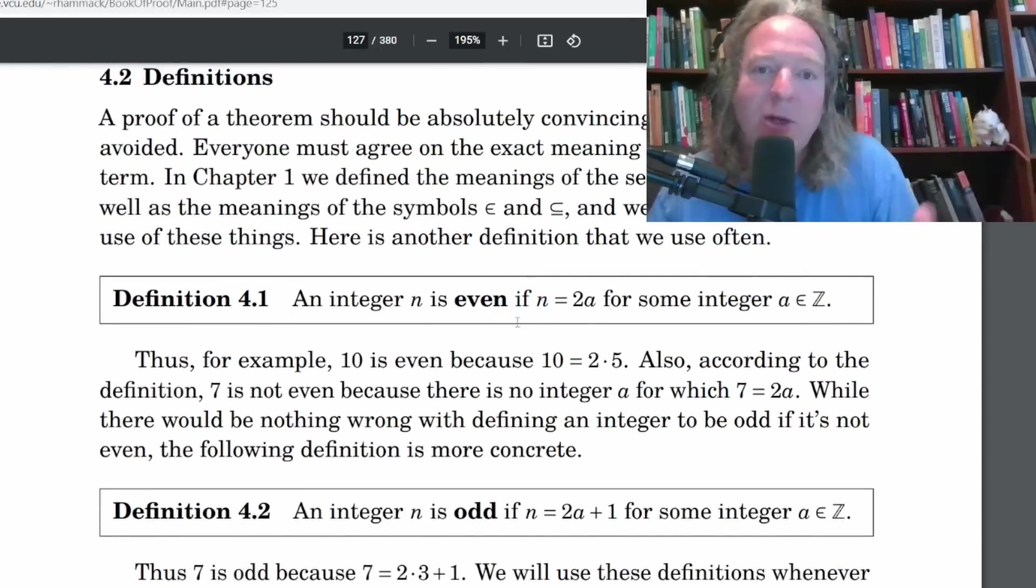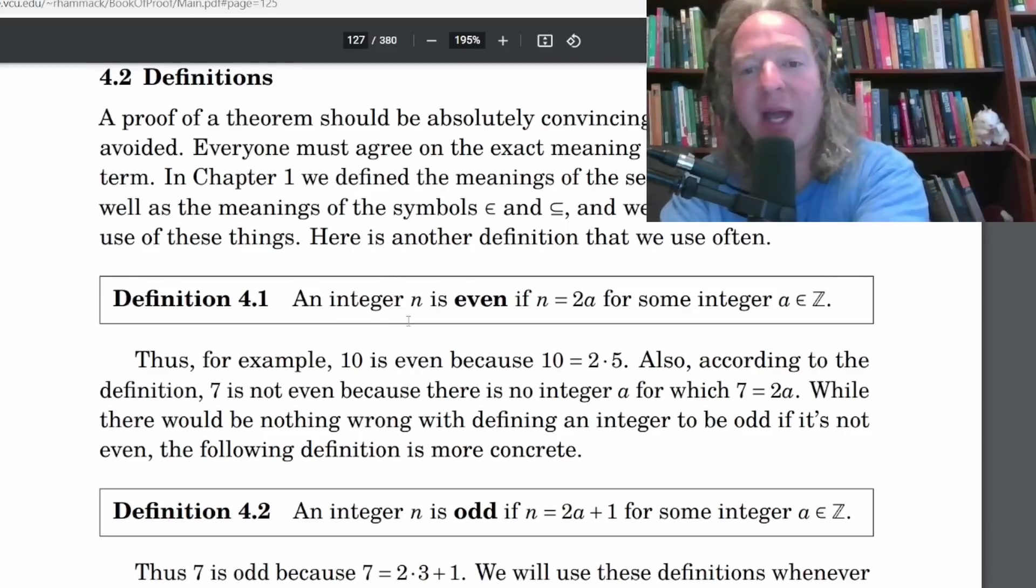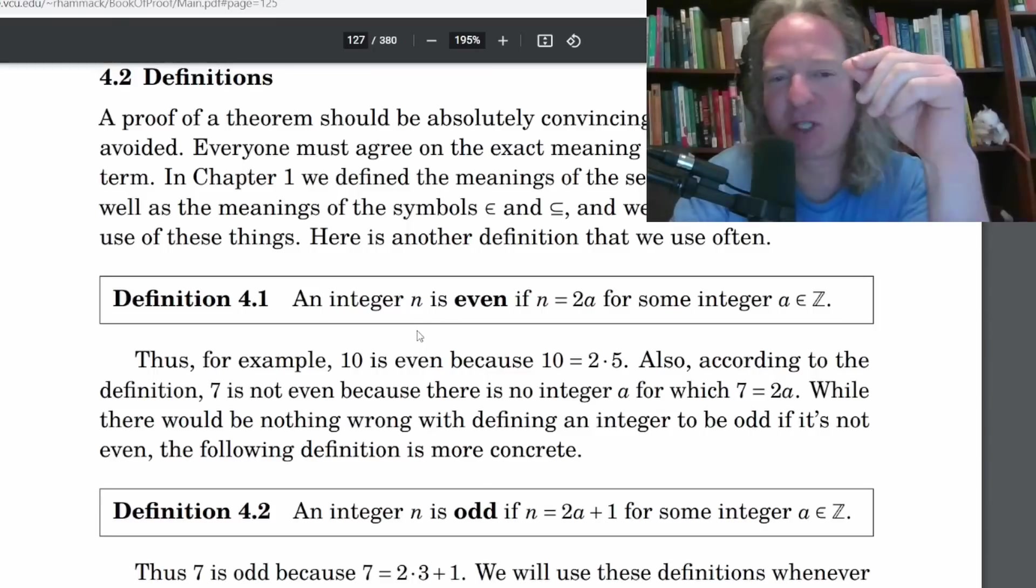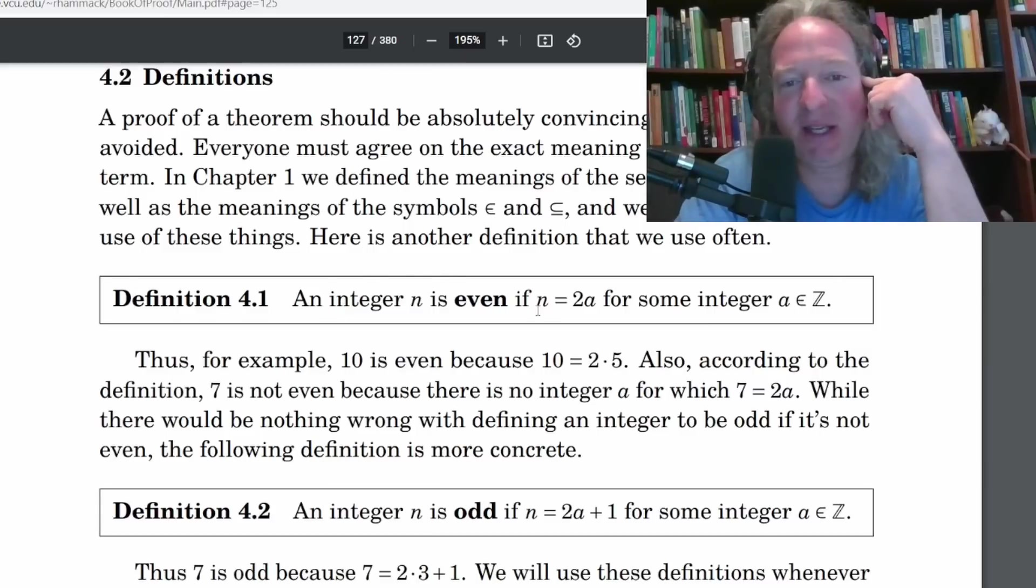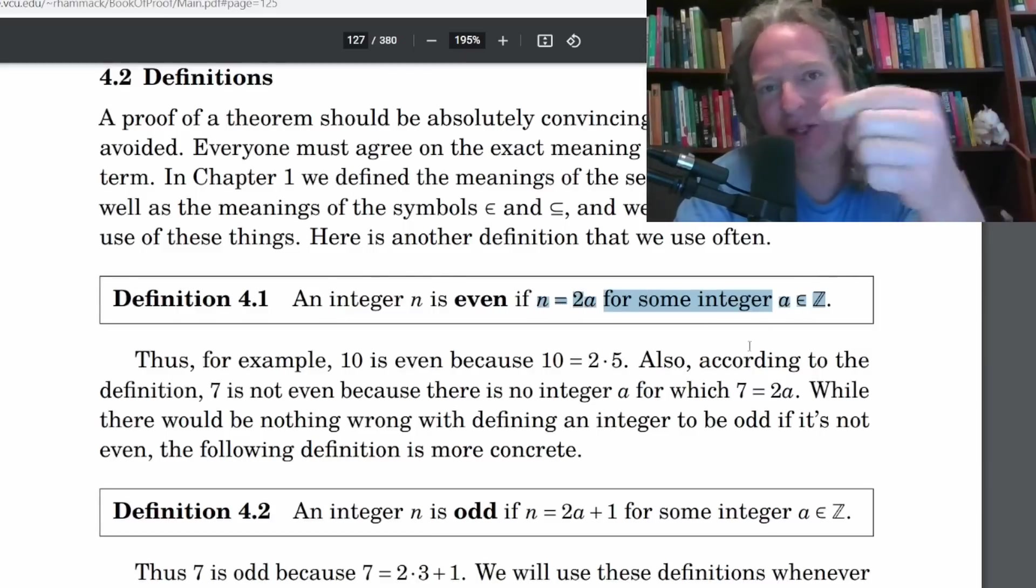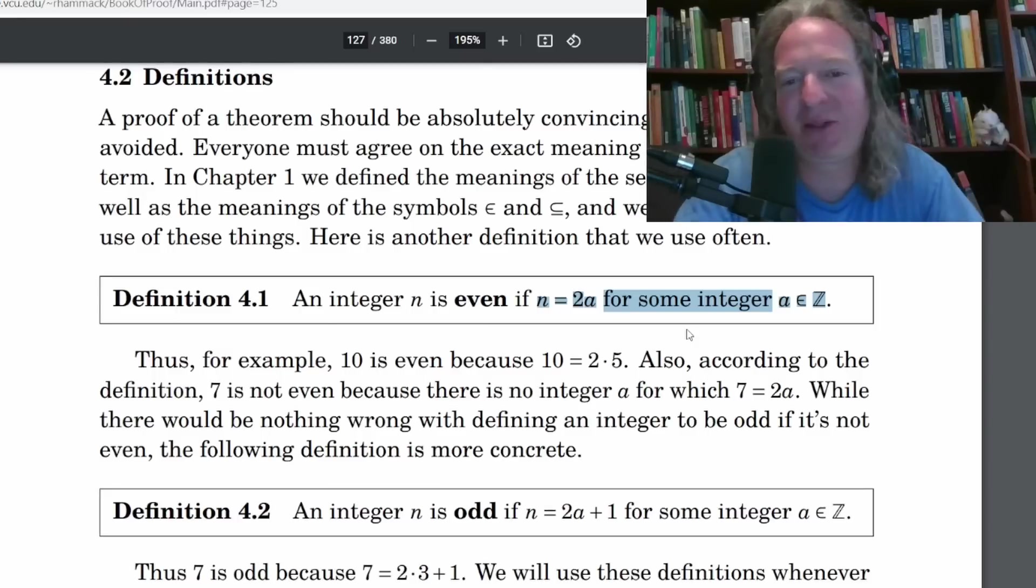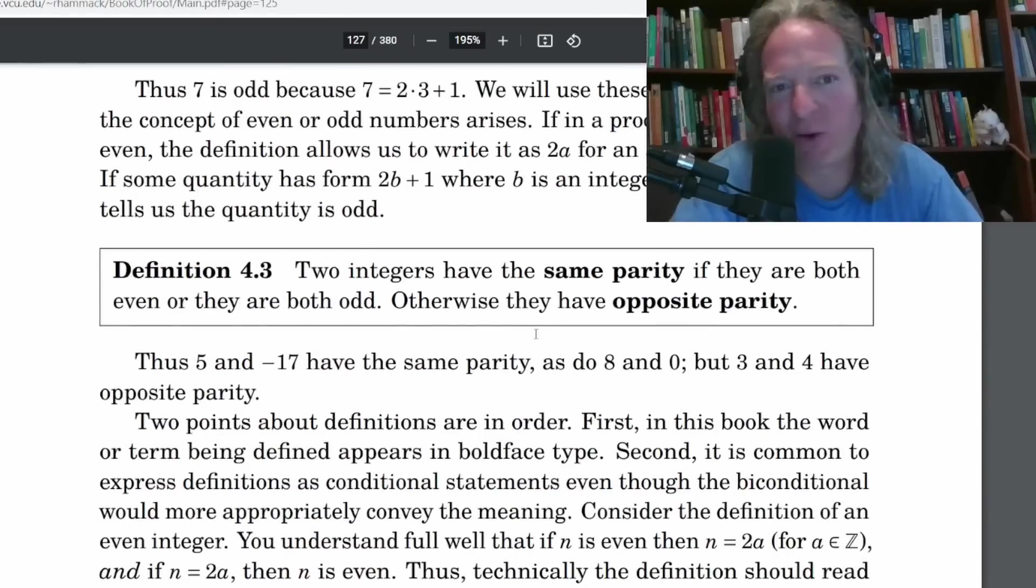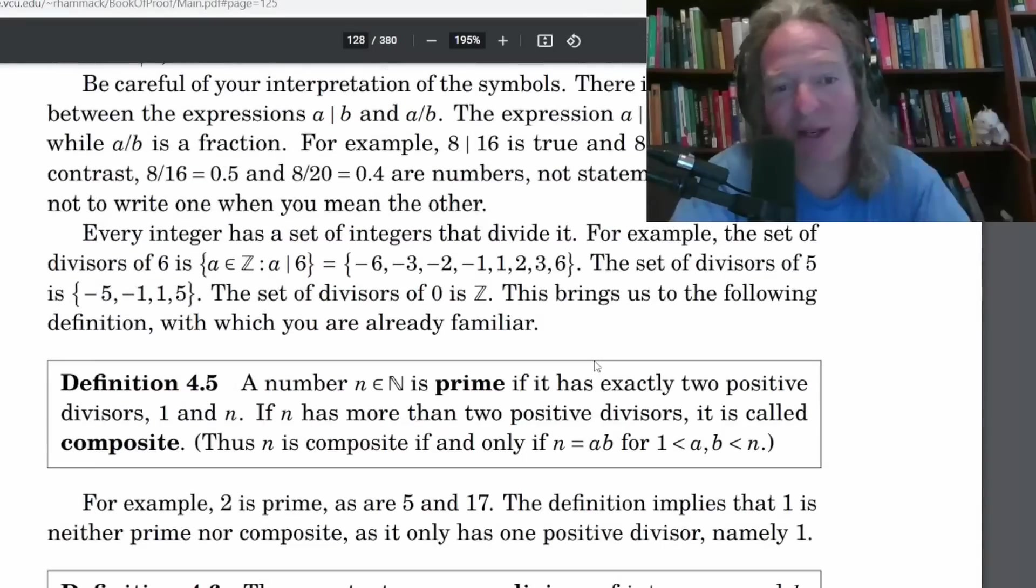Here he talks about definitions. And he goes on to mention that every definition is really an if and only if statement, which is so key in my opinion. Technically, the definition should read an integer n is even if and only if n equals 2a for some integer a in Z. So there should be an if and only if in every definition. But whenever it's a definition, you have to assume it goes both ways. If the integer is even, then it's a multiple of 2. If it's a multiple of 2, it's even.